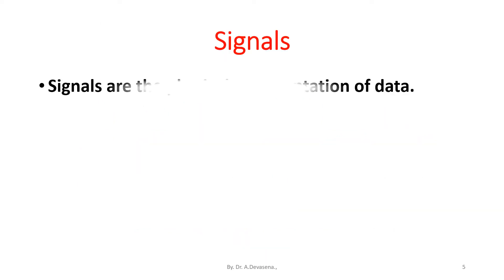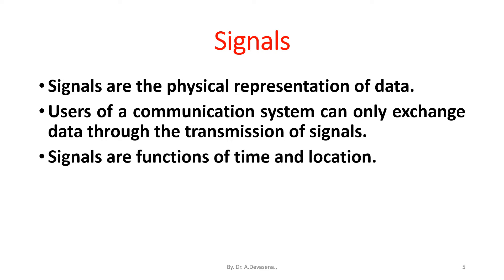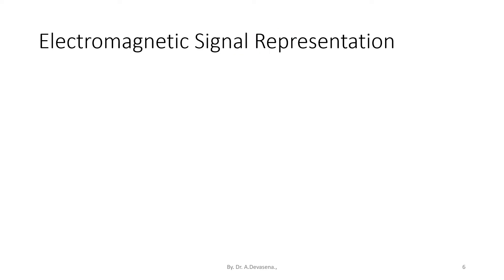Signals. Signals are the physical representation of data. Users of a communication system can only exchange data through the transmission of signals. Signals are functions of time and location. Here is an electromagnetic signal representation.